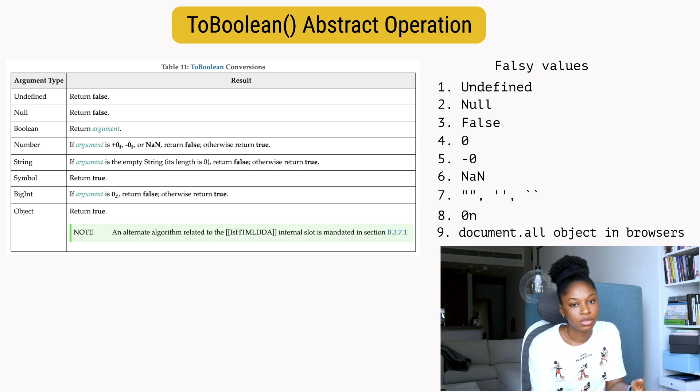These are the list of falsy values we have in JavaScript. What are the truthy values? Well, everything that is not on the falsy list. The falsy list is very short, so whatever is not on this list currently is a truthy value.